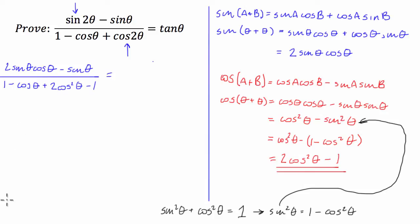Now what does this equal to? Well, 2 sine theta cos theta minus sin theta divided by, we've got 2 cos squared theta minus cos of theta.